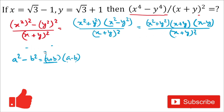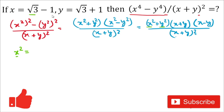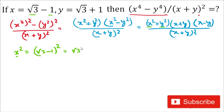Now separately we will calculate x²+y². First, x² — the value of x is √3−1, so we square it. Using the formula (a−b)² = a²−2ab+b²: (√3)² minus 2 times √3 times 1 plus 1² gives 3 minus 2√3 plus 1, which equals 4 minus 2√3. So x² = 4−2√3.